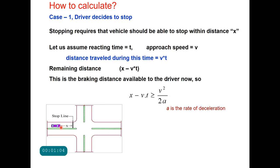Let us assume that the reaction time of the driver is small t. Therefore it will take time t to decide whether to stop or to continue, and during this time the driver will be moving at speed v. The distance travelled during this reaction time will be v×t, so the remaining distance available to the driver is x minus v×t. This is the braking distance available, and therefore this braking distance must be equal to or more than v²/2a, where a is the rate of deceleration.